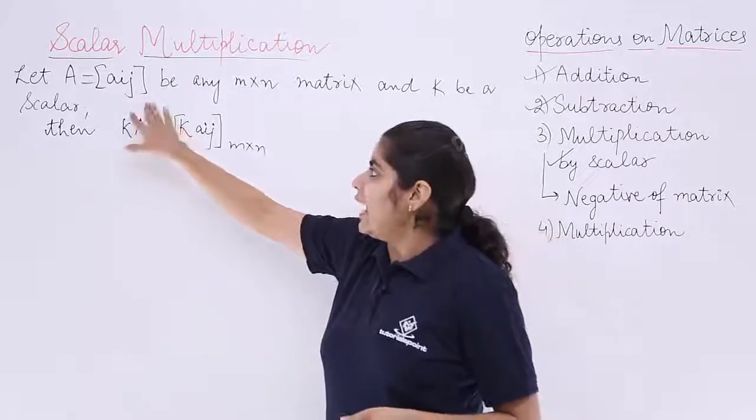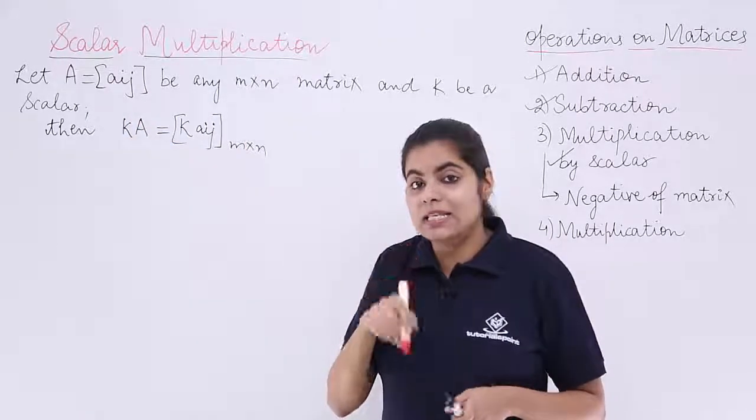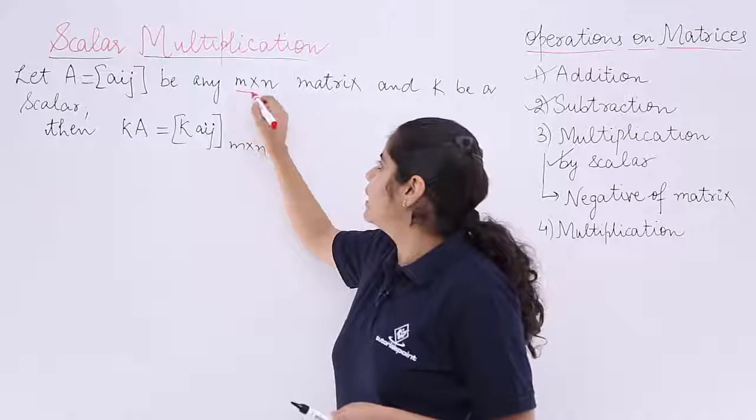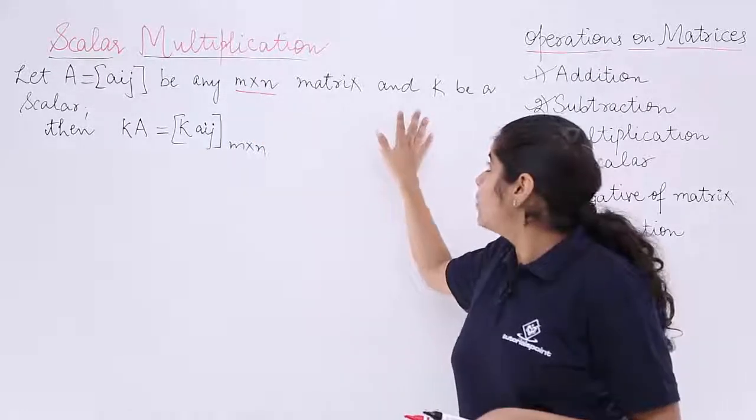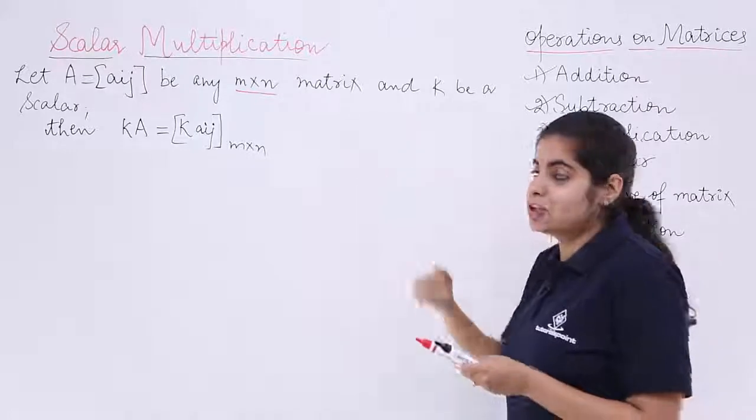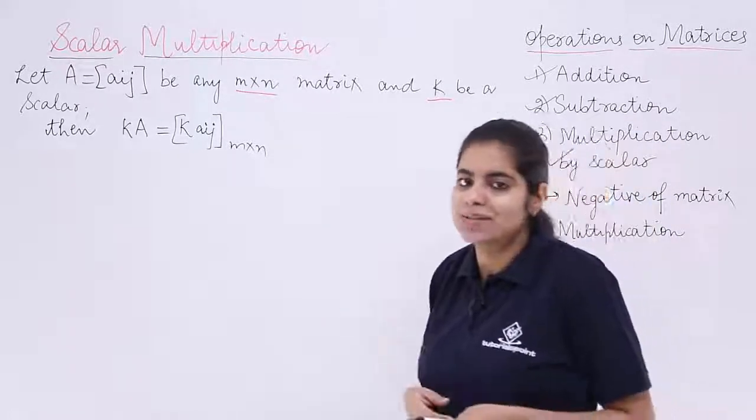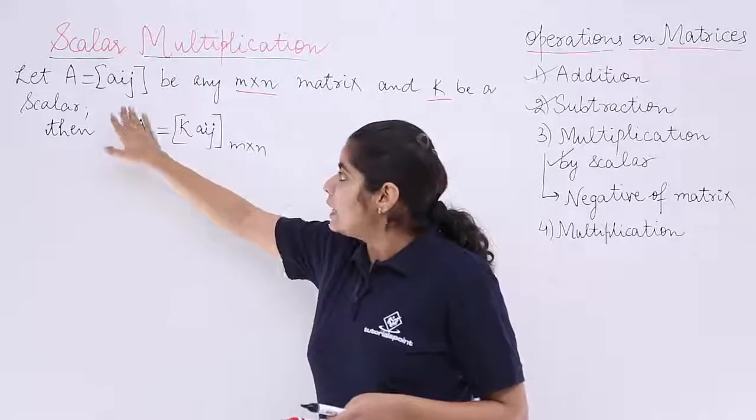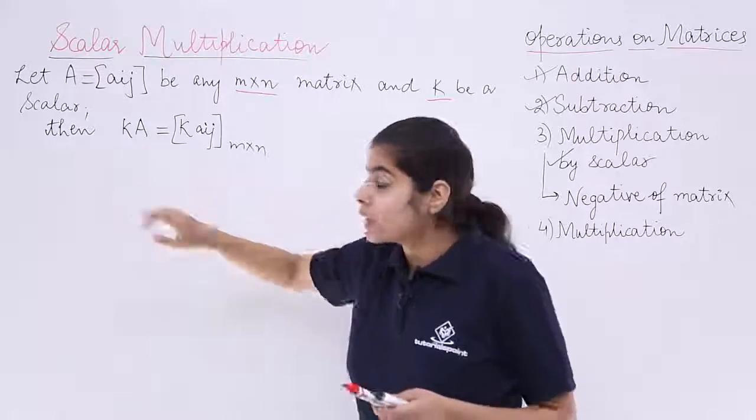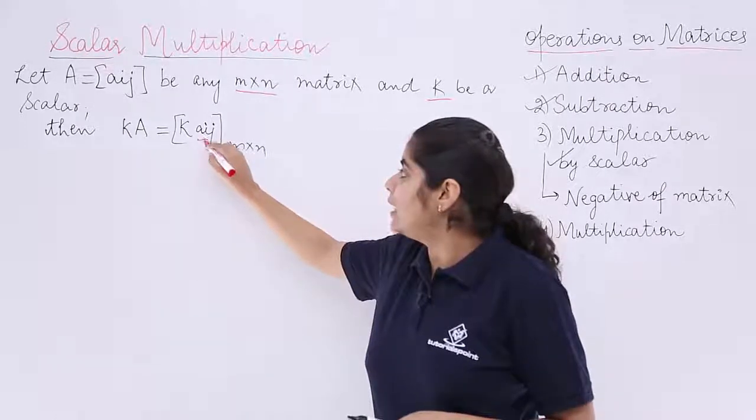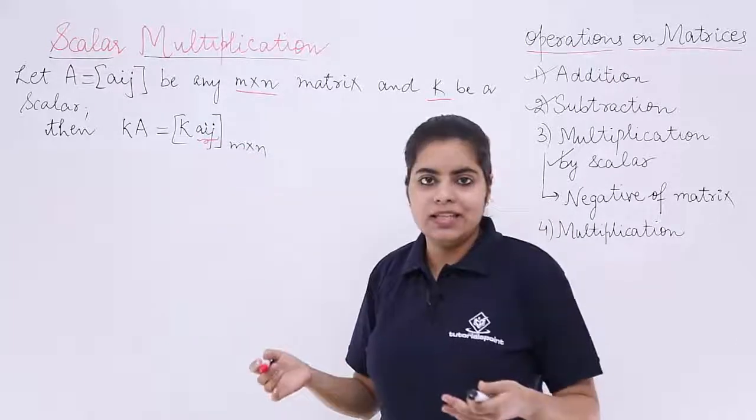Let A = [Aij] be a matrix with order m by n - that means m rows, n columns. I also have a scalar k, a simple constant scalar. When that scalar is multiplied by the given matrix, k into A means you multiply each element Aij with k. That's it.